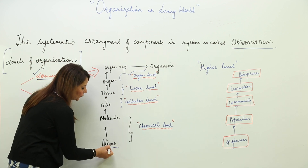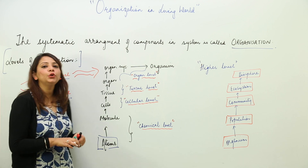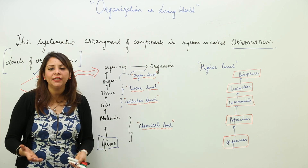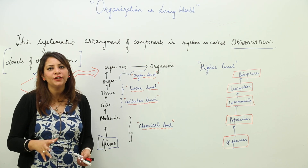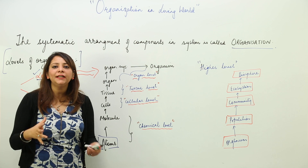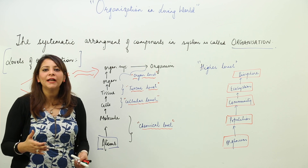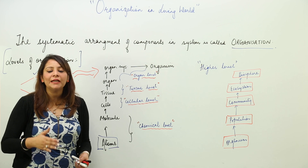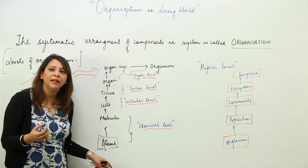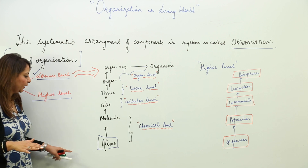In the lower level organization, the lowest level is the atom. Atoms are the smallest units which are actually the components of matter, and no living matter exists without atoms. All living matter contains the atom as the smallest unit. Basic components like carbon, hydrogen, oxygen, and nitrogen atoms form the basic components of any living matter.